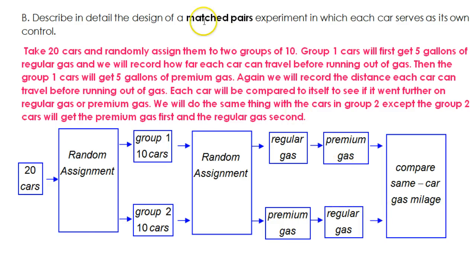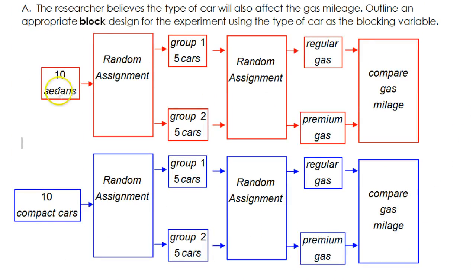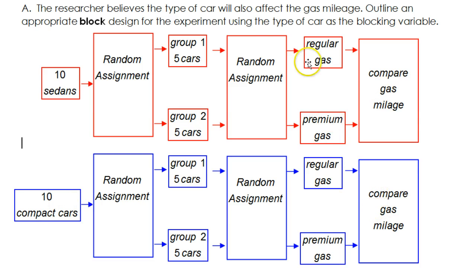This is matched pairs — where each subject gets both treatments in a row. As opposed to block design, where you separate subjects into two or more categories and run the same experiment twice. But in block design, each subject is only getting one treatment or the other — they're not getting both treatments.